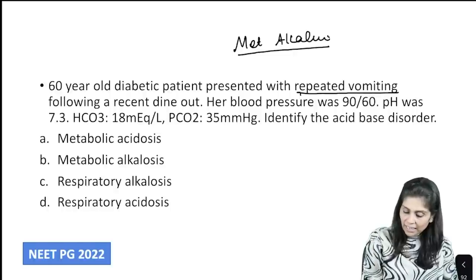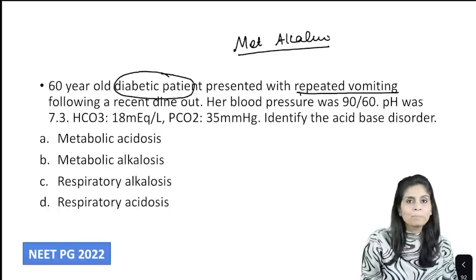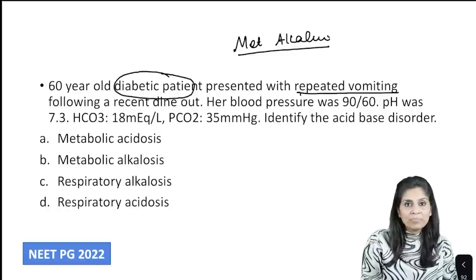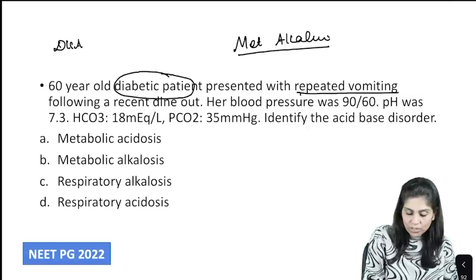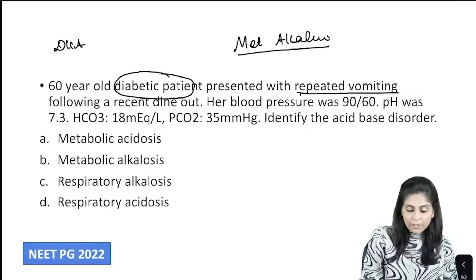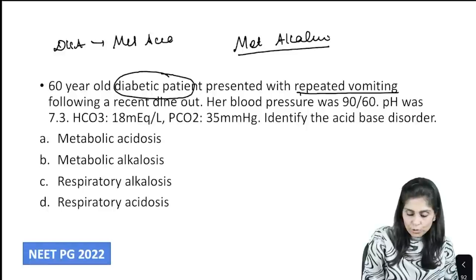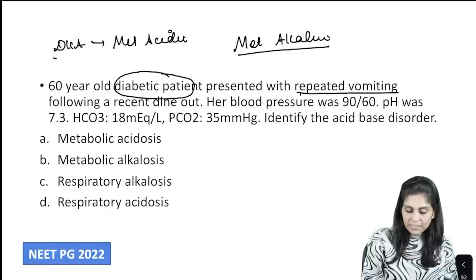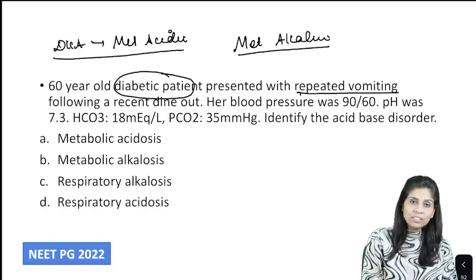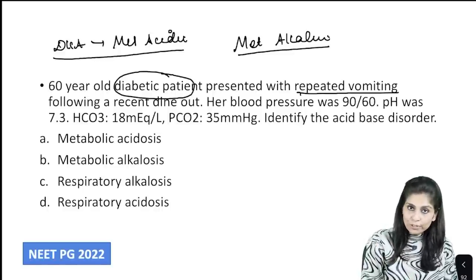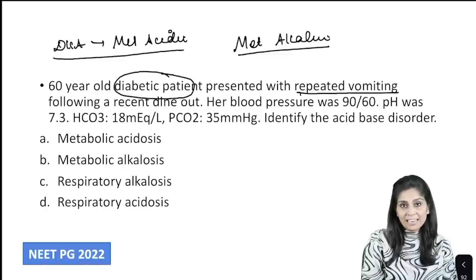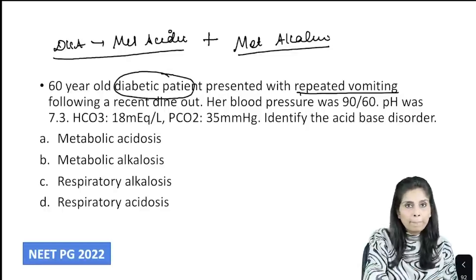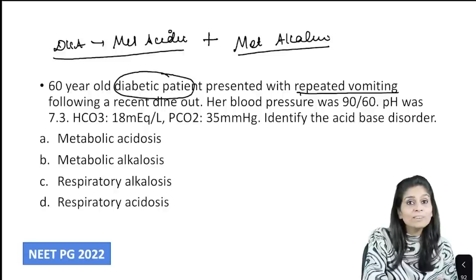Following a recent dine out, the person is also a diabetic individual. Whenever a diabetic individual is stressed, there can be diabetic ketoacidosis, which causes metabolic acidosis. So this person can present with metabolic acidosis from DKA, metabolic alkalosis from vomiting, or a combination of both. Let's find out based on the lab values.